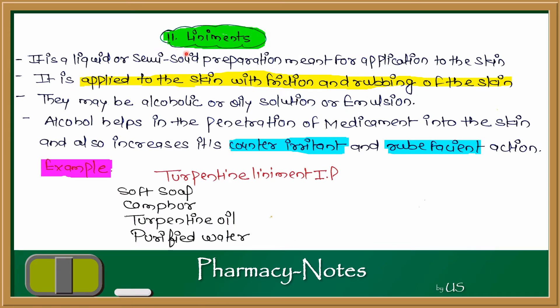Next, liniment. Liniment is a liquid or semi-solid preparation meant for application to the skin. It is a monophasic liquid dosage form which is topically applied with friction and rubbing. Unlike lotion which is applied without rubbing, liniment is applied to the skin with friction or rubbing. Liniments may be an alcoholic or oily solution, or an emulsion. Alcohol helps in penetration of the medicament into the skin, and also increases counter-irritant and rubefacient action.